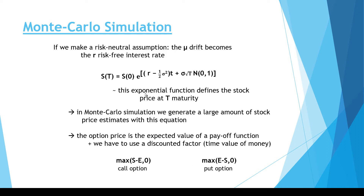In Monte Carlo simulation we just have to generate a large amount of stock prices according to this equation. The option price is the expected value of a payoff function, and we have to use a discount factor because of the time value of money. We calculate the option price at capital T expiry. For a call option it is the maximum of S minus E or zero; for a put option it is the maximum of strike price minus the stock price and zero.